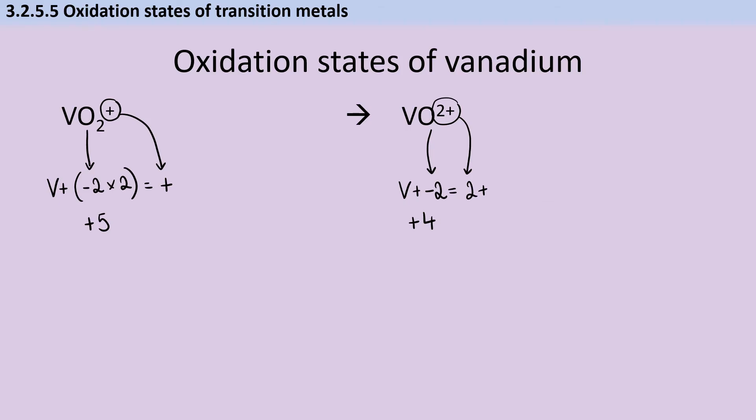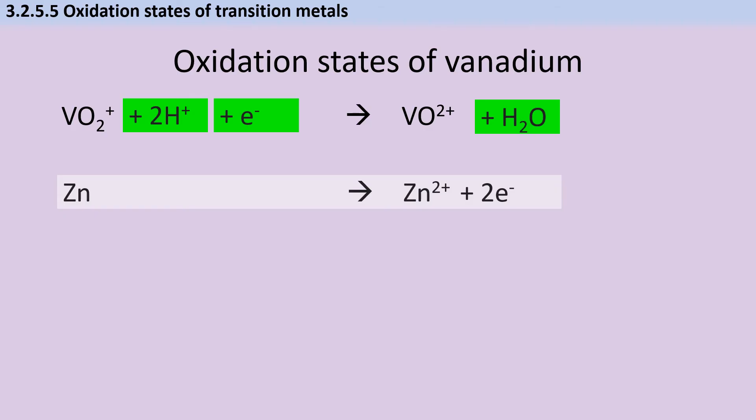To make this half equation balance, I need to think about charges, oxygen, hydrogen, and electrons. To balance oxygen, I need to add a water molecule, and then to balance the hydrogens I've added, I need two hydrogen ions. To make the charges balance, I add a single electron, which also sorts out the oxidation states. If we use zinc as our reducing agent, when zinc is oxidized it loses two electrons to form Zn2+ ions, but I can't join these half equations if the electrons don't balance. So first I double up my first equation, then that allows me to cancel out the electrons. If I join these together, I get an overall equation which looks like this.